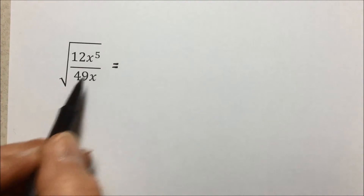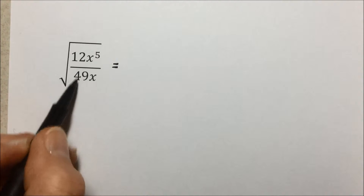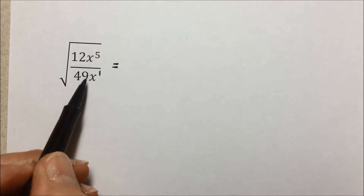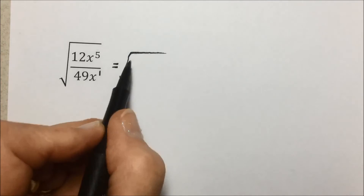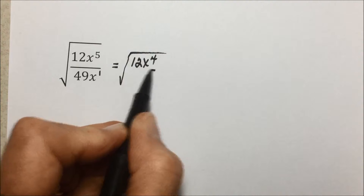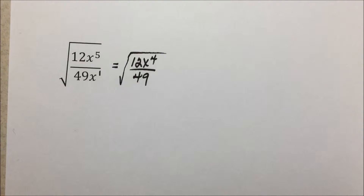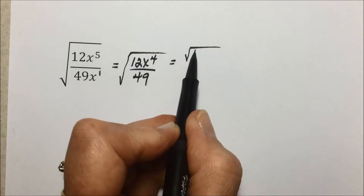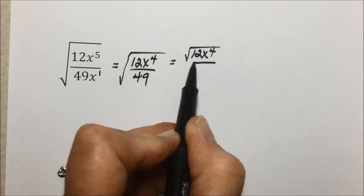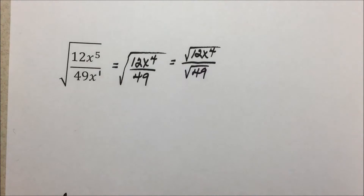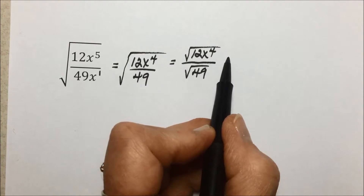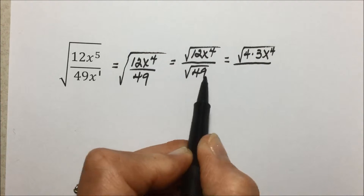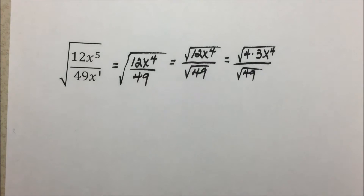In the next example, 12 and 49 have nothing in common. However, x to the 5th over x to the 1st — common bases — we can subtract our exponents, so we have the square root of 12x⁴ over 49. We've simplified the fraction as far as we can. Now we'll separate it into the square root of the numerator, 12x⁴, over the square root of the denominator, 49. The square root of 12 is not a perfect square, but 12 can be broken down into 4 times 3, and we'll leave x to the 4th as is. 49 is a perfect square, so we don't have to do anything with that.